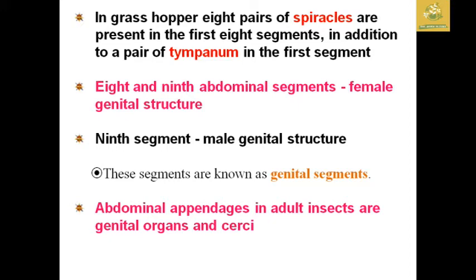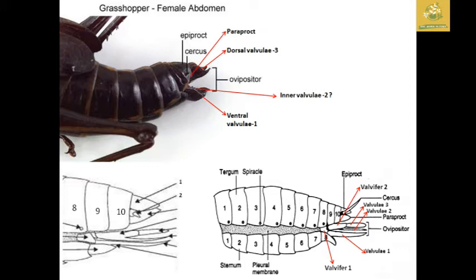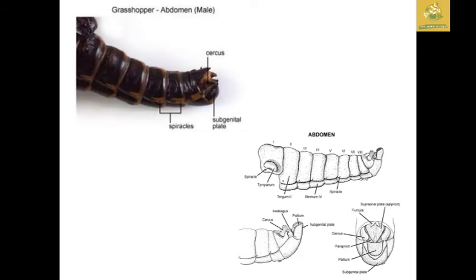The cerci are found on abdominal segments eight to eleven. The eighth and ninth segments are female genital segments, the ninth is the male genital segment, and the tenth and eleventh are the cerci. The cerci are associated with oviposition structures including the ventral valve and dorsal valve, where the anus and other genital functions occur. I have given detailed pictures of the grasshopper abdomen — both male and female.